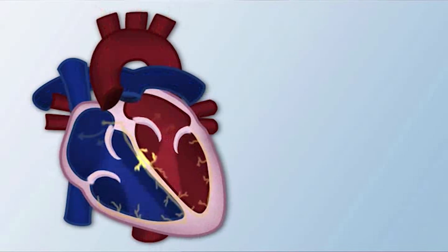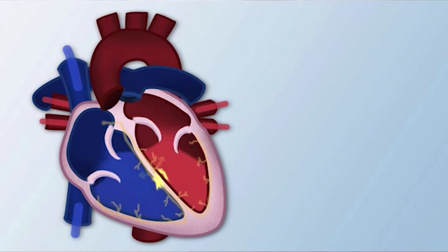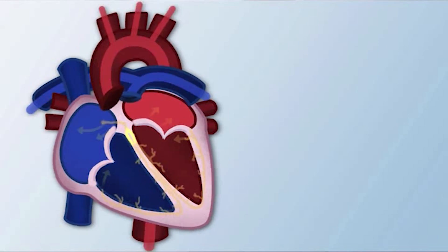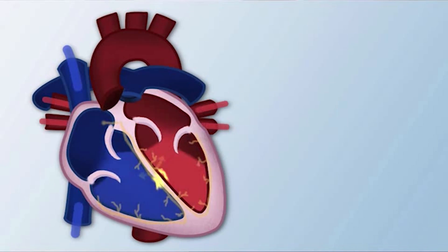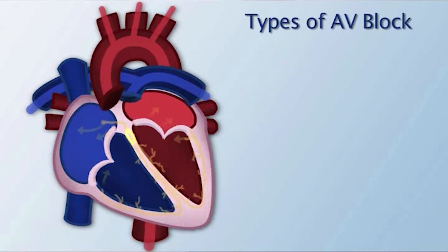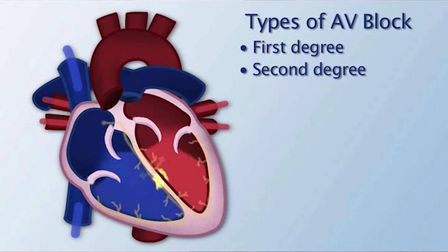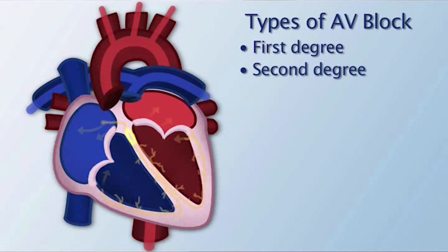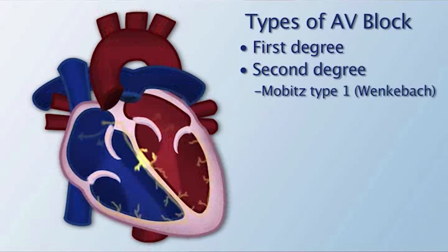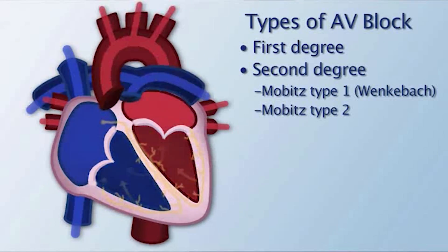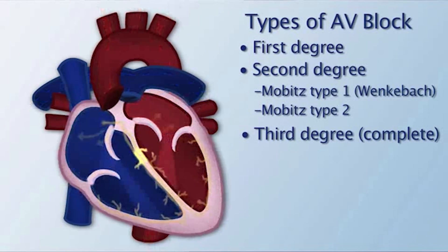Disturbances of atrioventricular, or AV conduction, occur when there is a disturbance in the conduction between the normal sinus impulse and the ventricular response. There are three main types of AV block: first-degree AV block, second-degree AV block — with two subtypes, Mobitz type 1 or Wenckebach, and Mobitz type 2 — and third-degree or complete AV block.